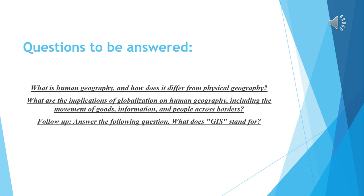What is human geography and how does it differ from physical geography? We're going to compare and contrast concepts. What are the implications of globalization on human geography, including the movement of goods, information, and people across borders? As a follow-up, we'll move on to types of innovative resources and tools like GIS — and what does it stand for?